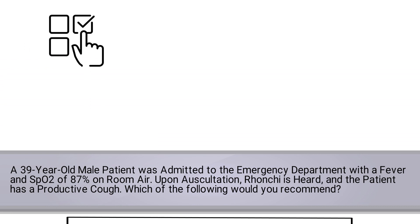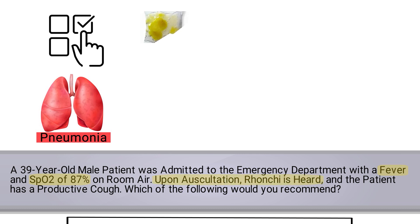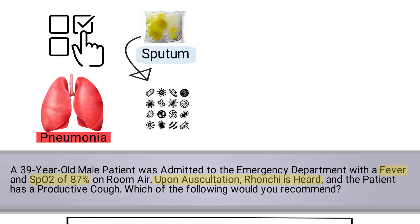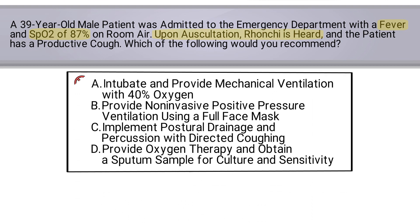To get this one correct, you needed to recognize that the patient has some type of infection such as pneumonia. You know this because the question states that the patient is hypoxemic, has a fever, and has ronchi on auscultation. In this case, you should obtain a sputum sample for culture and sensitivity to identify the type of organism that's present. Additionally, oxygen therapy would be indicated to treat the patient's hypoxemia. Intubation and non-invasive positive pressure ventilation would not be indicated, and postural drainage and percussion would also not be recommended. Therefore, the correct answer is D: provide oxygen therapy and obtain a sputum sample for culture and sensitivity.